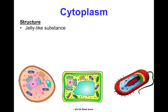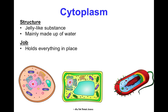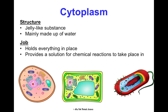Cytoplasm has a jelly-like consistency and is mainly made of water. Its job is to hold everything in place inside the cell. It also provides a solution for chemical reactions to take place in, which will be important in later units. You can see it's just the empty space inside each of the cells. All cells have cytoplasm.